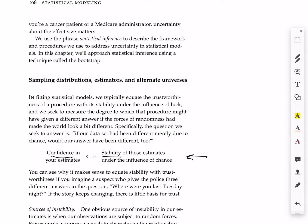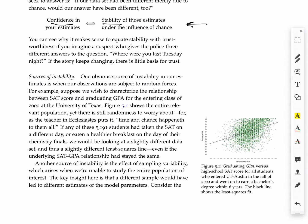So a natural question here would be, why would the story change? Why would our estimates be unstable under the influence of chance? Well, one obvious source of instability in our estimates is when the observations in our data set are themselves subject to random forces.